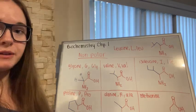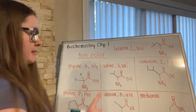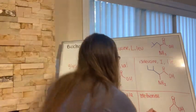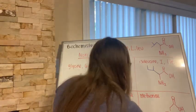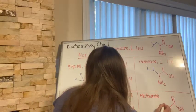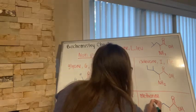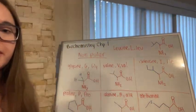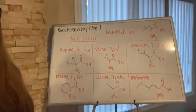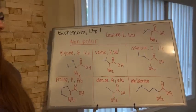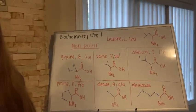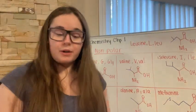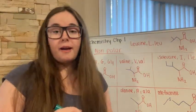Finally we have methionine. Methionine is a little more complicated — it actually has a sulfur in its R group. I like to remember methionine because it kind of looks like an M with the sulfur in it. So those are our non-polar amino acids.